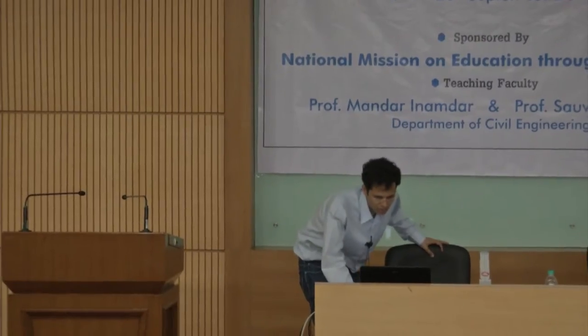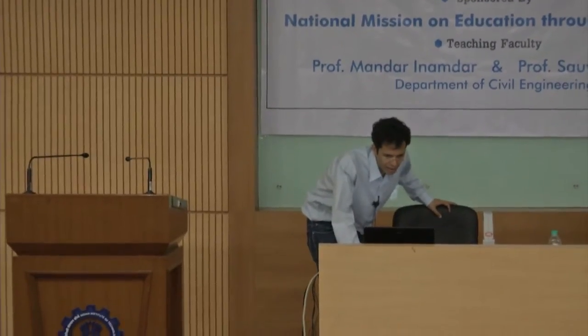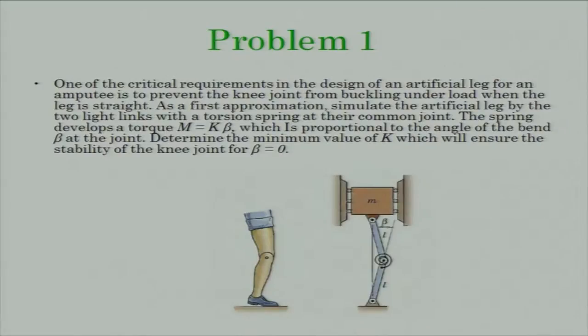Let us go straight to tutorial problems — very simple, medium, and a little bit difficult. The first is a simple, very practical problem. What is described is a joint — this is a very crude caricature for an artificial knee.